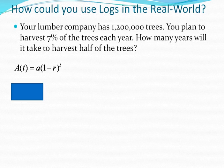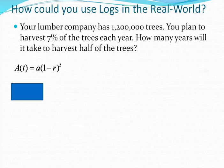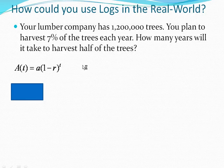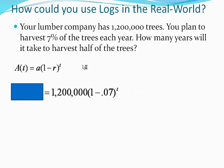And a, if you remember, is the initial amount. The little a is your initial amount, so that's going to be your 1.2 million. You got your r, which is your rate. Our rate is 7%, and it's minus that because we are taking 7% of the trees out of the forest, and the t is how long it takes to get there, which we don't know. How many years will it take to harvest half of the trees? So we plugged in what we know.